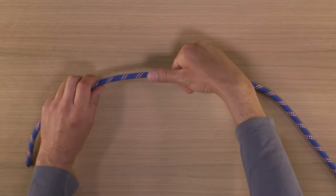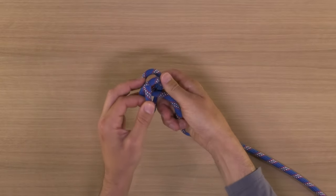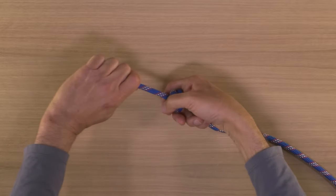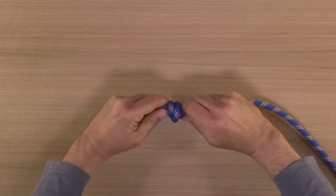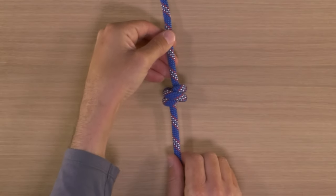To make a double overhand, pinch the rope with your thumb and wrap the end twice around your thumb in an upward direction, second loop above the first. Pass the end through both loops and dress the knot. After it's dressed, you should be able to see an X on one side and an equals sign on the other.